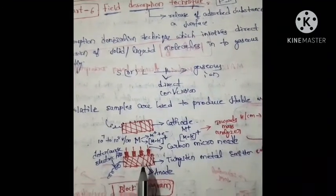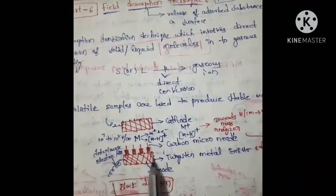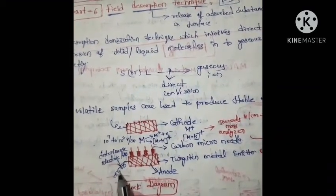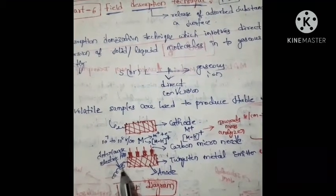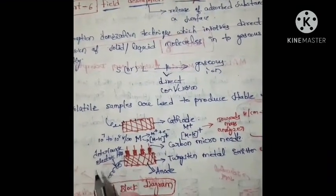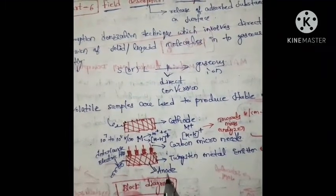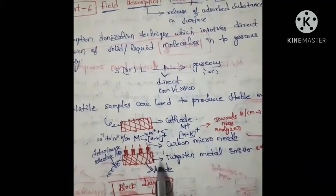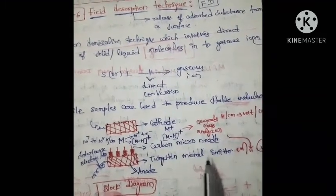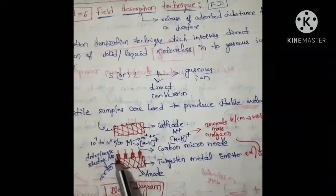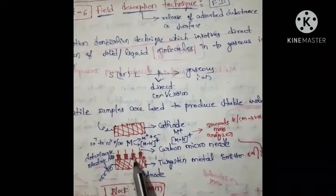Observe this block diagram to understand the field desorption technique. Here we have a tungsten metal emitter, an anode, and a cathode. The wire-like structures indicate the intense electric field. This is the anode, this is the cathode, and this is the tungsten metal emitter.